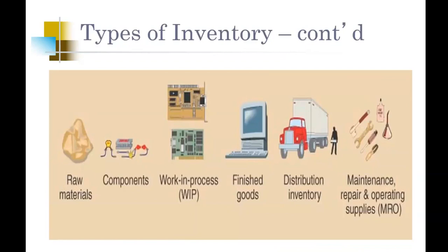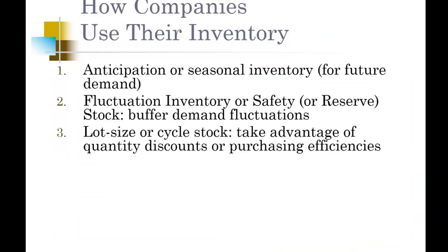So maintenance, repair, and operating supplies is very important. One type of inventory is what we refer to as anticipation inventory or seasonal inventory. Think Christmas, Thanksgiving, Halloween — you're going to see a jump in the sale of turkeys during the October-November timeframe because that's seasonal inventory. You're going to see a jump in sales of televisions in November because of Black Friday. That's seasonal inventory.